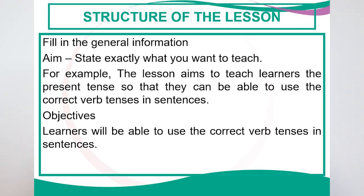Then there are your objectives. From the aims you need to derive objectives. For example, the objective might be: learners will be able to use the correct verb tenses in sentences. You may have two to three objectives, because in a lesson you want to evaluate different aspects of the language — vocabulary, spelling, pronouns — depending on your teaching plan. You will have one aim but may have more than one objective.